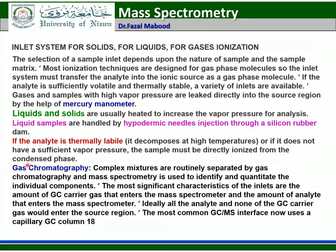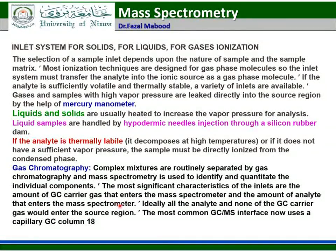Complex mixtures are routinely separated by gas chromatography and mass spectrometry is used to identify and quantify the individual components. The most significant characteristic of the inlets is the amount of GC carrier gas and the amount of analyte that enter the mass spectrometer. Ideally, all the analyte and none of the GC carrier gas would enter the source region. The most common GC-MS interface now uses a capillary GC column.